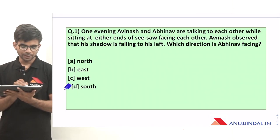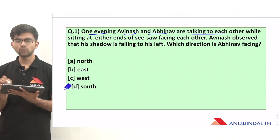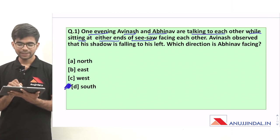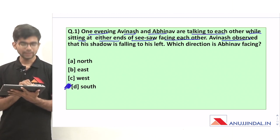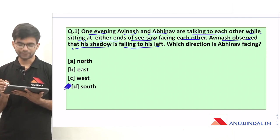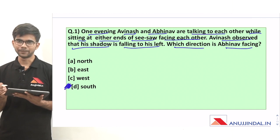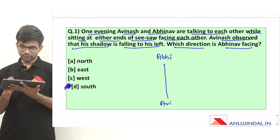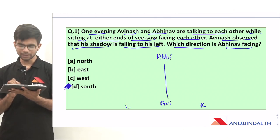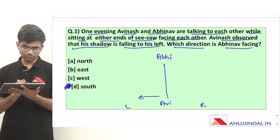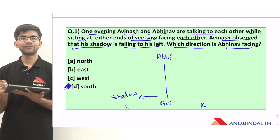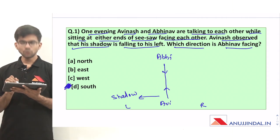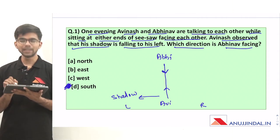Let us see the first question. One evening Avinash and Abhinav are talking to each other while sitting at either ends of a seesaw facing each other. Avinash observed that his shadow is falling to his left. Which direction is Abhinav facing? Let me draw the diagram. This is Avinash and this is Abhinav. This is the right of Avinash and this is the left of Avinash. The shadow is formed to the left of Avinash, and both are facing each other.